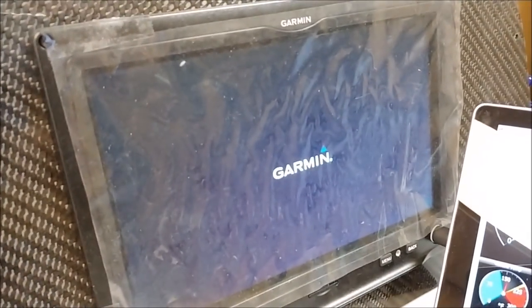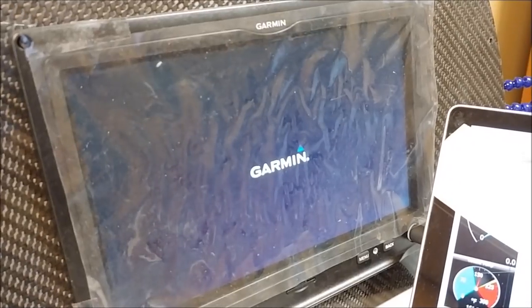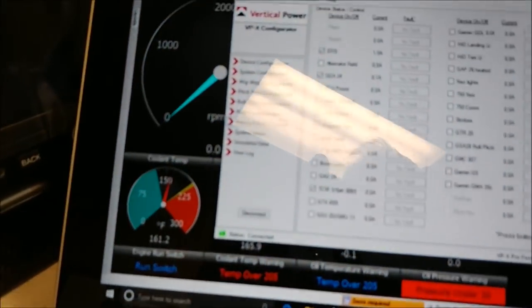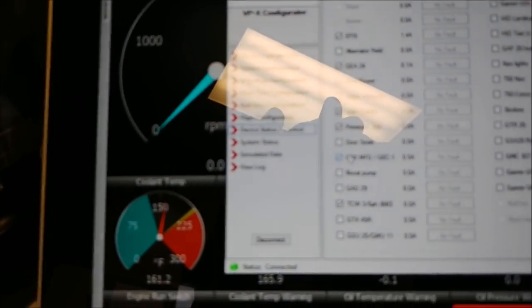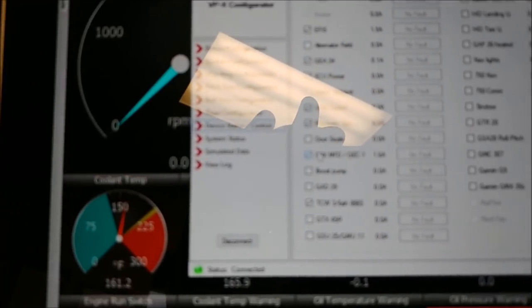Things are moving along. As I've showed you before, with the vertical power you can power up all the different units in here. Eventually, when I get the switch panel hooked up, it'll just be turning on the avionics master which will turn most of the stuff on here.